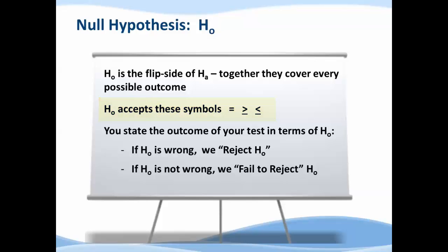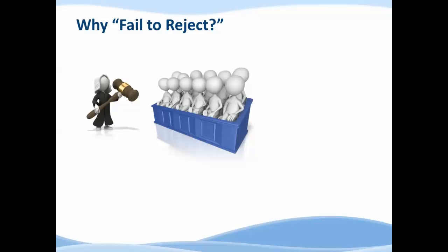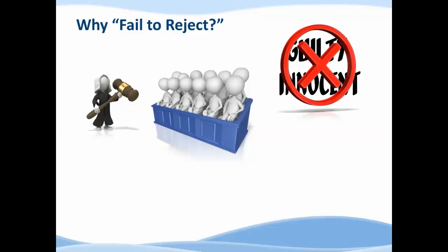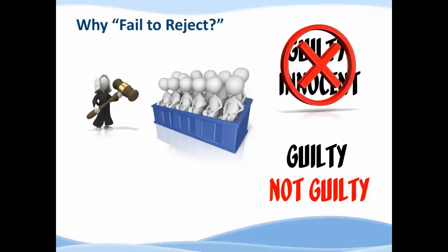By tradition we always state our statistical conclusion in terms of the null hypothesis. If it is clearly wrong we say we reject the null. If we can't prove it wrong we say we fail to reject the null. That's kind of an odd phrase so let's talk about that for a moment. Load into your head your favorite celebrity trial. It's quite possible that only the person on trial knows for certain whether they are guilty or innocent. But think about what a jury does - they're going to render a verdict. They do not say guilty or innocent. What do they say? They say guilty or not guilty.